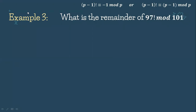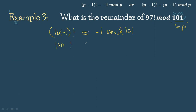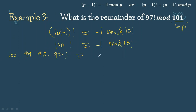For our third example, what is the remainder of 97 factorial mod 101? So 101 is our P. We have (101 minus 1) factorial congruent to negative 1 mod 101, which gives 100 factorial congruent to negative 1 mod 101. We expand 100 factorial as 100 times 99 times 98 times 97 factorial, congruent to negative 1 mod 101.